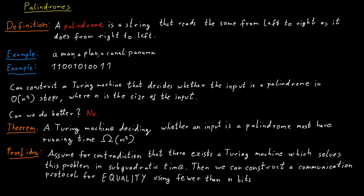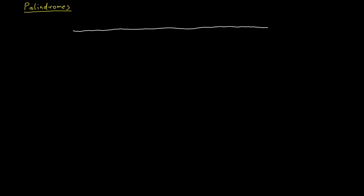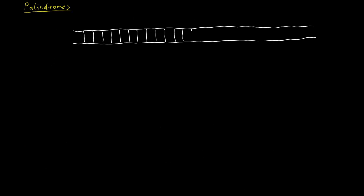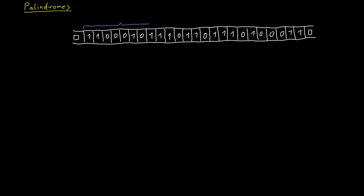Take the Turing machine that solves the palindrome problem and look at the input on the tape, which is n bits. We split this tape into three separate parts: the first n/3 bits, the middle n/3 bits, and the last n/3 bits. We want to focus on the middle section.